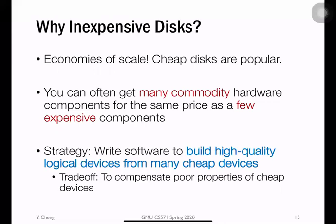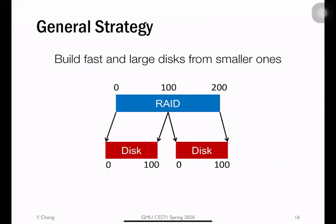The RAID idea exploits a fundamental trade-off — often considered in many aspects of computer science — which is to compensate for the poor properties of individual cheap devices by combining them to provide greater performance. Let's talk about general strategies: how to combine extremely cheap commodity hard disk drives together. One naive or straightforward strategy is to simply combine multiple disks, which is called JBOD — Just a Bunch of Disks. This is the baseline strategy.